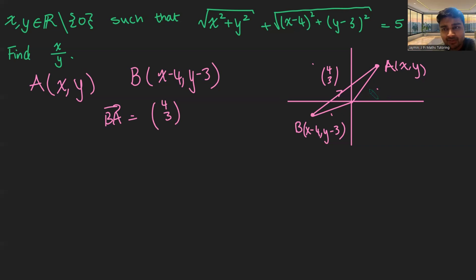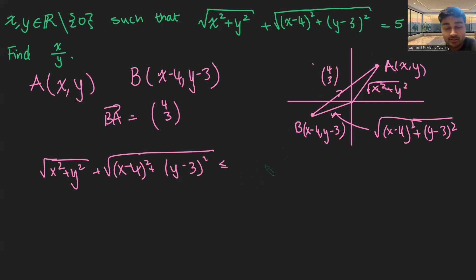Well, what are the lengths of this side? Well, just using basic distance formula, this is just going to be the square root of x squared plus y squared. And this length here is going to be the square root of x minus four squared plus y minus three squared. And so therefore, just using this triangle inequality, we get that the square root of x squared plus y squared plus the square root of x minus four squared plus y minus three squared must be less than or equal to the length of this hypotenuse, or not hypotenuse, just the longest side. So square root of four squared plus three squared. But that there is just five.